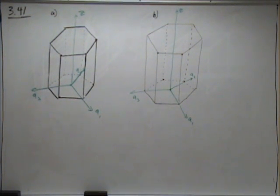Problem 341 asks to determine the indices for these hexagonal unit cells. We need to just find the intercepts and then go through the process of finding the indices.